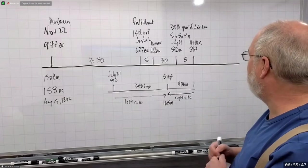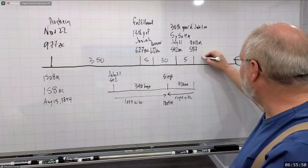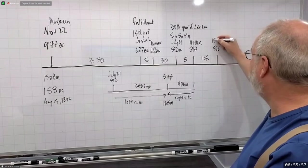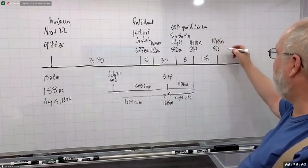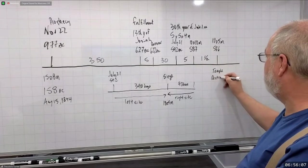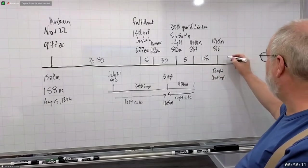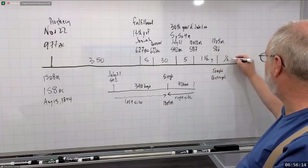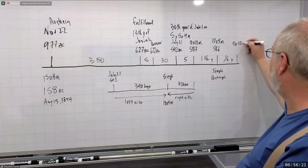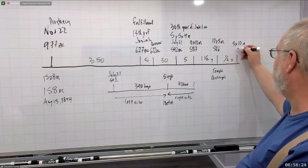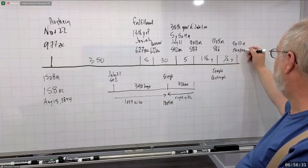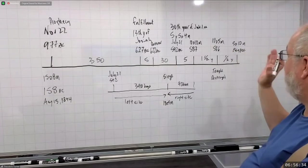Then you're going to have a siege for a year and a half. And then in the summer of 586, on the 10th day of the 5th month, you're going to have the temple destroyed. And then six months — a half a year — later, on the 5th day of the 10th month, we're going to have another event: the escapee returns.